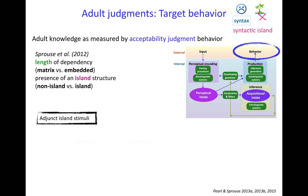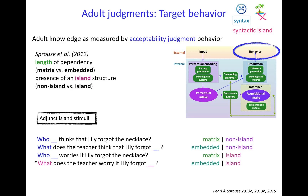Finally, we have adjunct island stimuli. Adjuncts in this case are words like 'if.' So 'what does the teacher worry if Lily forgot' is your island-crossing stimulus — you have the island structure present and the WH word connecting up to that gap.